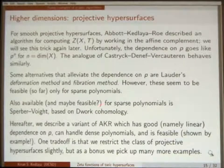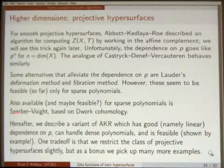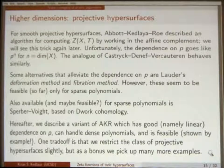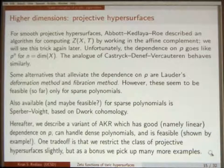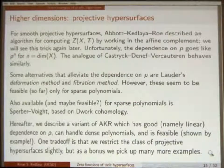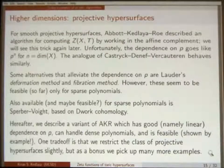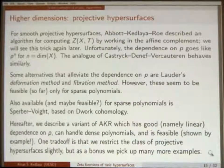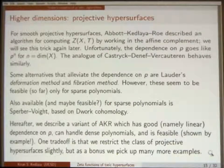Another technique — which will be presented on Friday — is Sperber-Voight. This goes back to Dwork cohomology, but it uses the fact that for non-degenerate hypersurfaces, you can replace the infinite dimensional vector space with a finite dimensional vector space and make the computation. If you do it for dense polynomials, it again has bad dependence on p, but for sparse polynomials it's doable. For monomial deformations, it's probably quite doable. The variant I'm going to describe has good dependence on p — linear dependence on p — and reasonable dependence on other things, and handles dense polynomials very well.